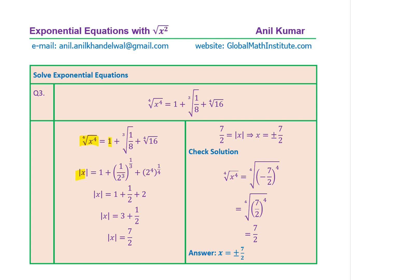One over 8 under the cube root means the cube root of one over 2 cubed, giving one over two. And 16 is 2 to the power of 4, whose fourth root is 2. Adding these fractions: the absolute value of x equals one half plus 2, which gives seven over two. So the answer is plus and minus seven over two. You can again verify that the negative value also works.